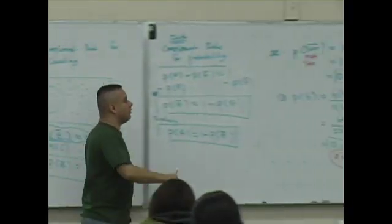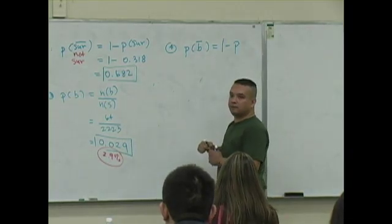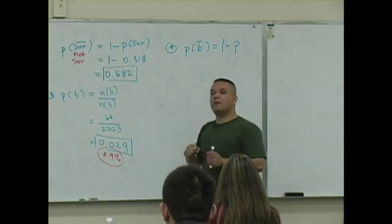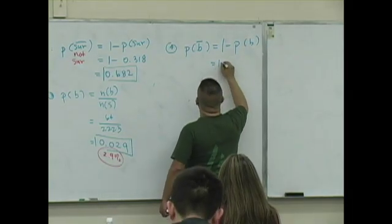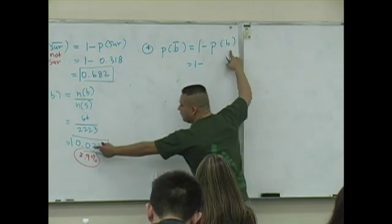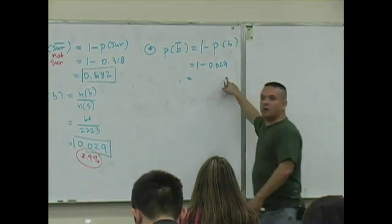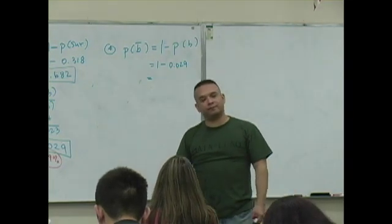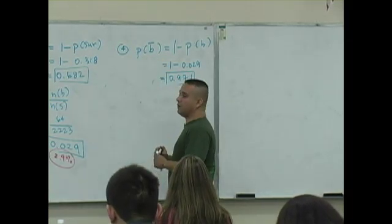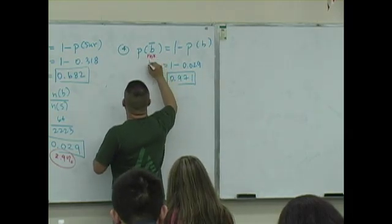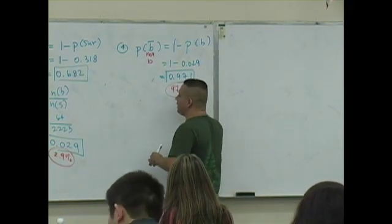So use the complement rule here. This is 1 minus the probability of what event? You have to tell me. What is it? It's 1 minus the probability of which event? Boy. Good. 1 minus, what was the probability of selecting a boy? 0.029. Isn't this so easy to do now? Your calculator's doing the work. What's 1 minus 0.029? 0.971. This is the probability of selecting a non-boy. And as a percent, 97.1% of the passengers aboard the Titanic were not boys.